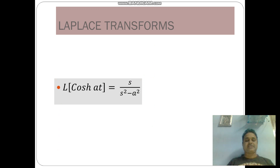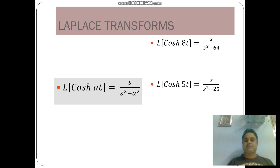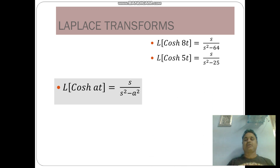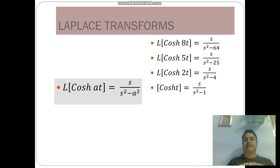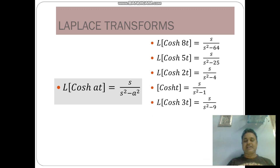L of cosh at is equal to s by s square minus a square. L of cosh 8t is equal to s by s square minus 64. L of cosh 5t is equal to s by s square minus 25. L of cosh 2t is equal to s by s square minus 4. L of cosh t is equal to s by s square minus 1. L of cosh 3t is equal to s by s square minus 9. L of cosh 4t is equal to s by s square minus 16.